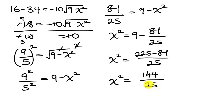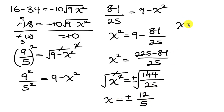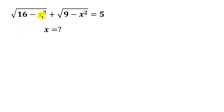Now we take the square root of both sides to eliminate the square. The left gives x, and on the right we put plus or minus the square root of 144 over 25. The square root of 144 is 12 and the square root of 25 is 5, so x equals positive 12 over 5 or x equals negative 12 over 5. Now let's check by substituting x equals 12 over 5.